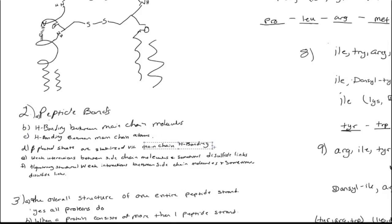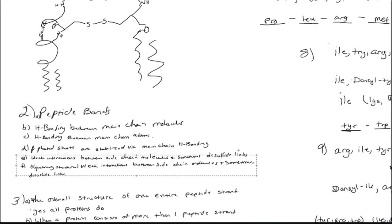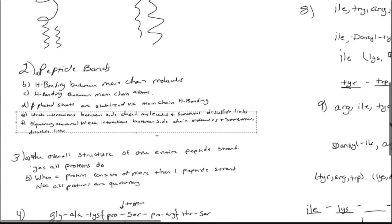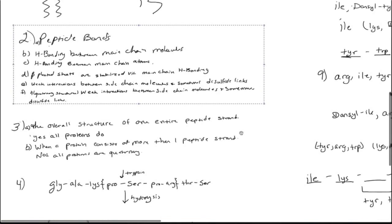B, C, and D are kind of all the same question, so you gave the same answer for all of them. And E and F aren't the same question, but they have the same answer. Those are good answers there. So we have to keep in mind that there are various levels of structure that are maintained by different types of bonds. I hope that you'll review these ideas, because it would be easy to forget them. Those are good answers for number 3.